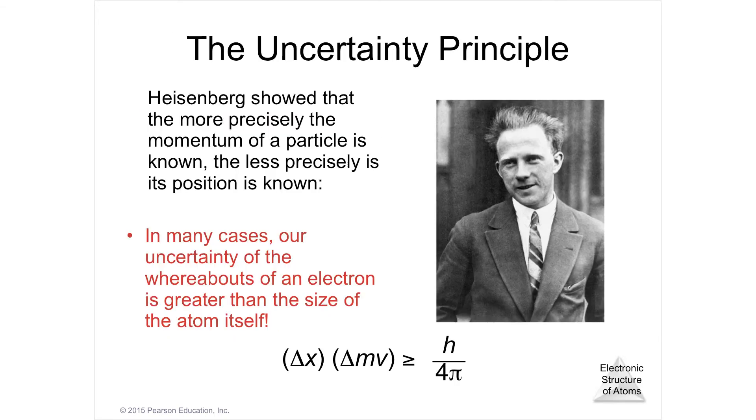The next guy to come along is Werner Heisenberg. As he was looking at the matter wave that de Broglie came up with, he made a determination that it's impossible to know where the location of the electron is at the same time that you know its momentum. You can know its momentum or its position, but you can't know both.